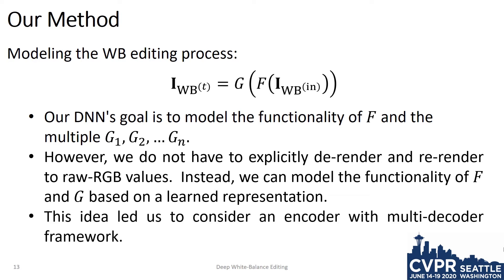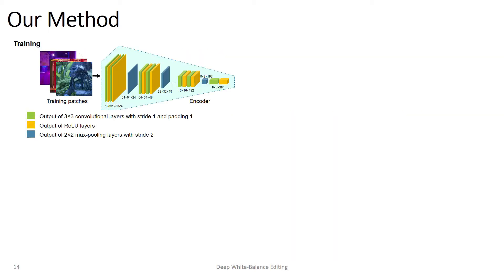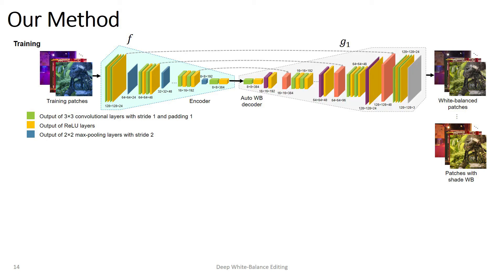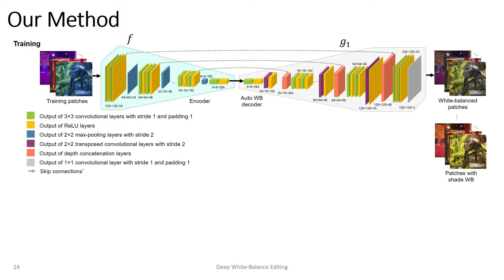This idea led us to design an encoder-decoder framework as follows. We use an encoder network to map images rendered with arbitrary white balance settings. This encoder mimics the function F from the previous slide. We denote the encoder with a lower case F. At training time, we have the corresponding patch used by the encoder that has been rendered with a different white balance setting, including the correct white balance that corresponds to an auto white balance. We train a decoder network, denoted as lower case G, to process the encoder's representation to an image with this white balance setting.